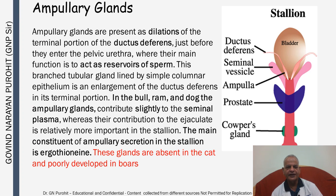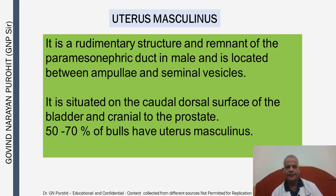The ampullary glands are present as dilations of the terminal portion of the ductus deferens just before they enter the pelvic urethra, where their main function is to act as reservoirs of sperm. This branched tubular gland lined by simple columnar epithelium is an enlargement of the ductus deferens in its terminal portion. In the bull, ram, and dog, the ampullary glands contribute slightly to the seminal plasma, whereas their contribution is relatively more important in the stallion — the main constituent of ampullary secretion in the stallion is ergothioneine. These glands are absent in the cat and poorly developed in boars. The uterus masculinus is a rudimentary structure and remnant of the paramesonephric duct in the male, located between the ampullae and seminal vesicles, situated on the caudal dorsal surface of the bladder and cranial to the prostate. 50–70% of bulls have a uterus masculinus.